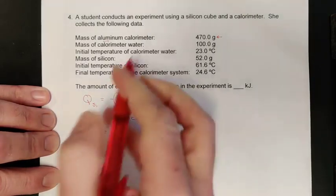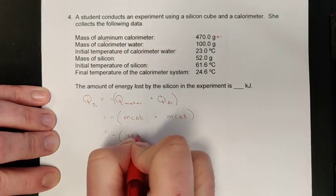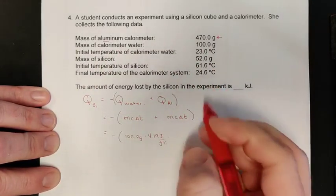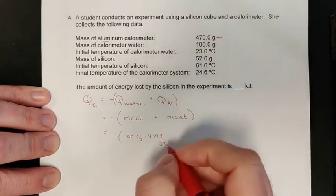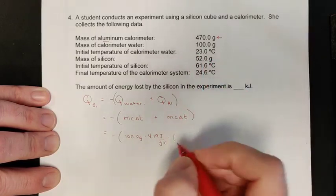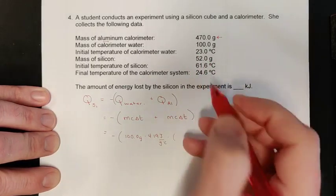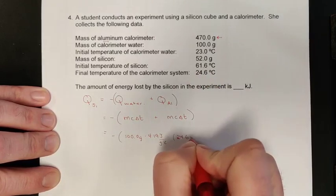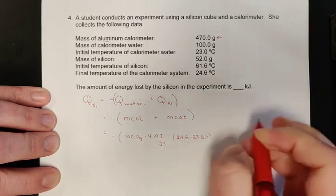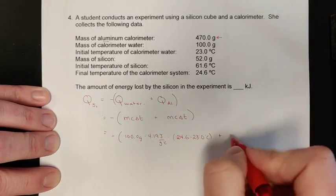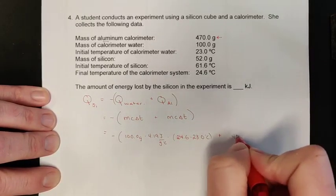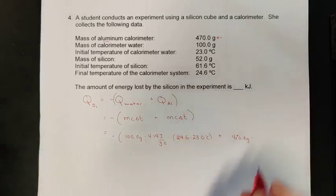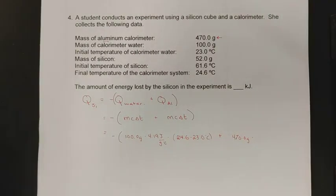Put this in here, and so we had 100.0 grams of water times the 4.19 joules per gram degree Celsius value for it times the temperature change. We started off with 23 degrees and finished at 24.6. We had some information for our aluminum, and so you can see that we also have 470.0 grams of aluminum.